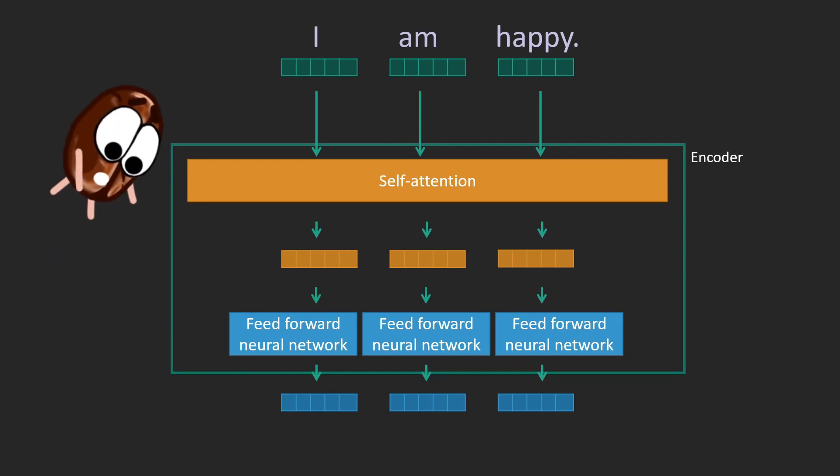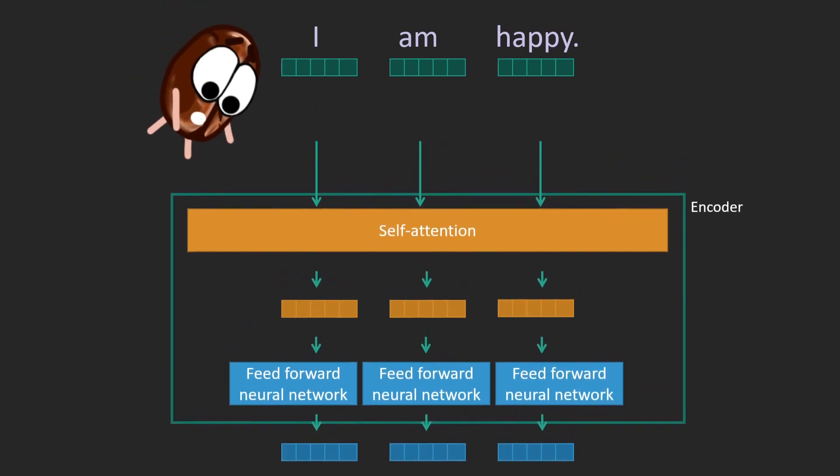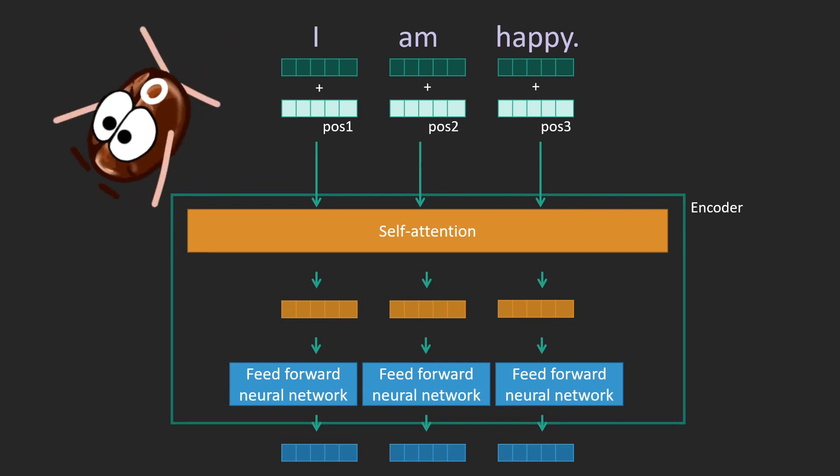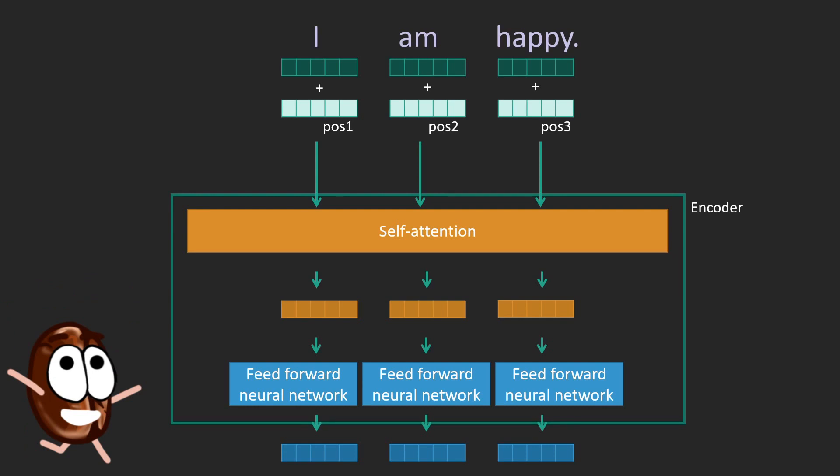They take every input vector and add a positional encoding vector, meaning that they add to each word representation a, so to say, unique ID, corresponding to the position in the sentence. Done. This is how the network knows the word order and it knows if it is at the beginning, the middle or the end of the sentence.